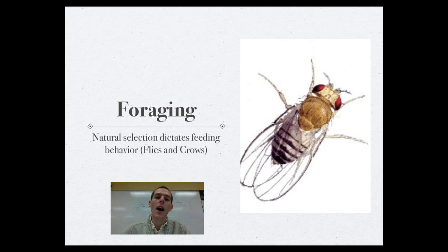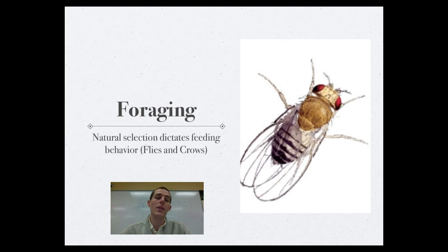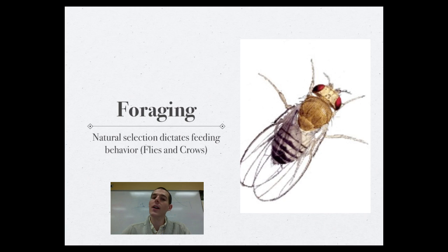Another example is crows. Some crows pull mollusks called whelks out of tide pools, pick up the shelled mollusk, fly up, drop it onto rocks, and once it cracks open, eat the soft inside parts. They don't want to fly too high because that wastes energy, and they don't want to fly too low because the whelk won't crack and they'll have to keep dropping it repeatedly. Scientists experimentally determined that the optimum height should be roughly five meters — the optimum balance between energy use and ability to break the whelk open — and they found that crows actually drop from about 5.23 meters, supporting the idea that this cost-benefit intersection determines the crow's behavior.